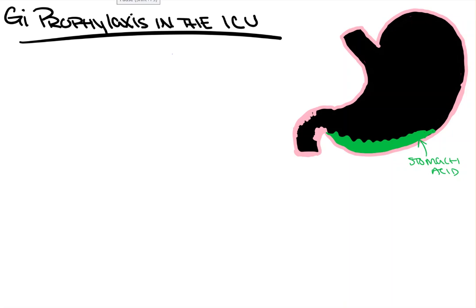Hi everyone. In this video from Count Backwards from 10, we're going to take a look at a topic that comes up all the time in the ICU, and that's GI prophylaxis. I'm going to be using the most up-to-date guidelines regarding GI prophylaxis as of January 2019. I'm going to talk about why we don't just put everybody on GI prophylaxis, the drugs that we use and their mechanisms of action, and the indications, both hard and soft.